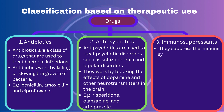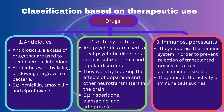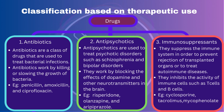Immunosuppressants: Immunosuppressants are a class of drugs that are used to suppress the immune system to prevent rejection of transplanted organs or to treat autoimmune diseases. They work by inhibiting the activity of immune cells such as T-cells and B-cells. They include drugs such as cyclosporine, tacrolimus, and mycophenolate.